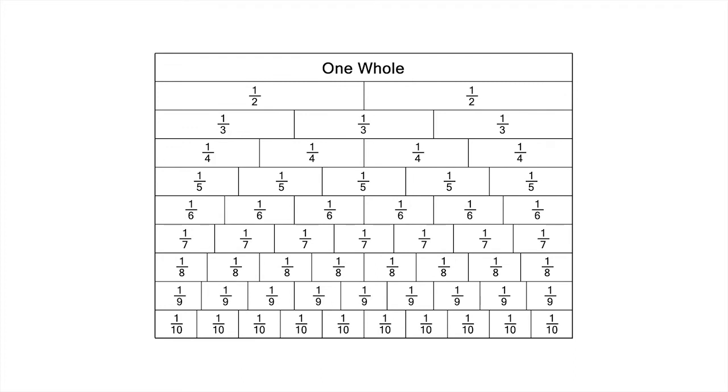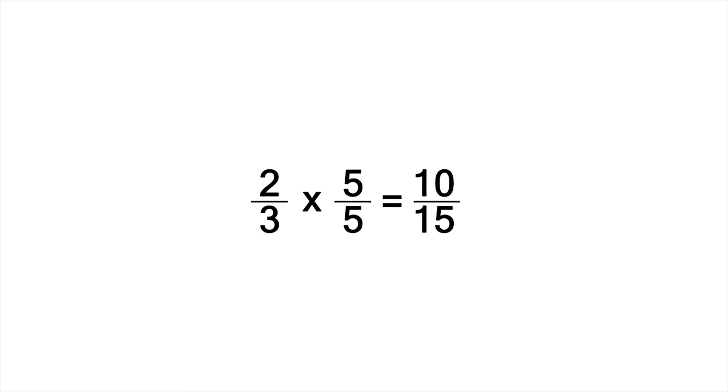Here are two ways of justifying what we've done. From our fraction wall, we know that five-fifths is the same as one whole, or simply one. So, multiplying two-thirds by five-fifths is really just multiplying two-thirds by one.